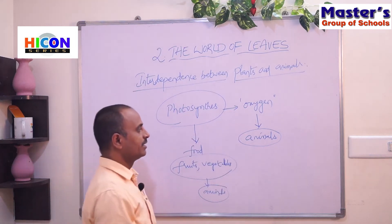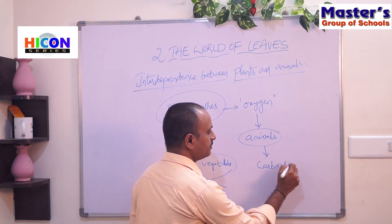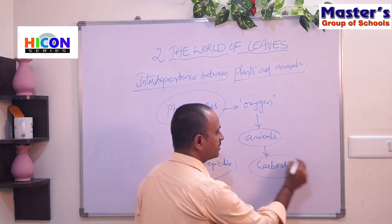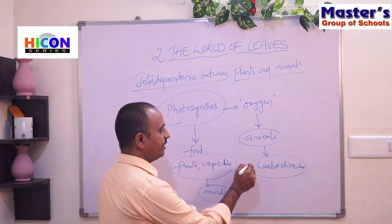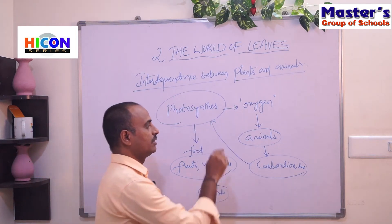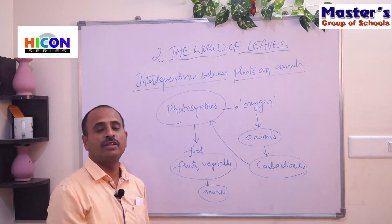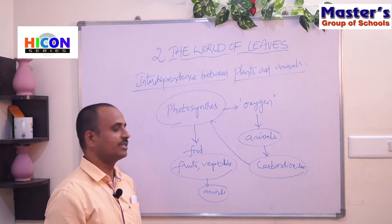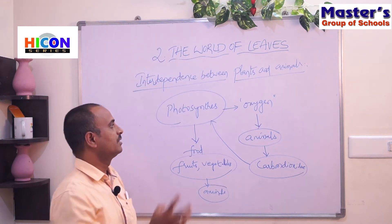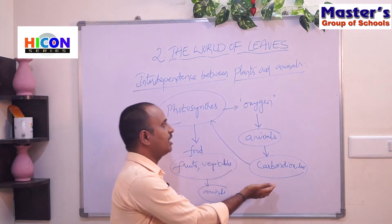In the same way, animals give off carbon dioxide into the atmosphere. The animals breathe in oxygen and breathe out carbon dioxide, and this carbon dioxide is utilized in the photosynthesis process by the plants. So the carbon dioxide given out by animals is helpful for plants in preparing their food. Both plants and animals depend upon each other — plants give oxygen and food for animals, and animals give carbon dioxide to plants.